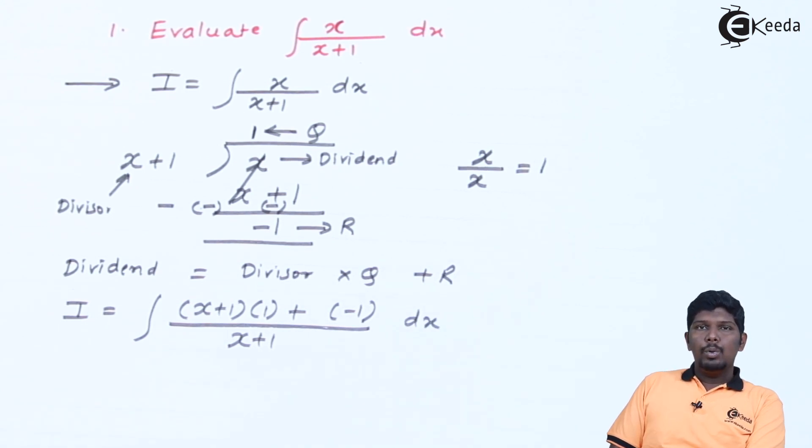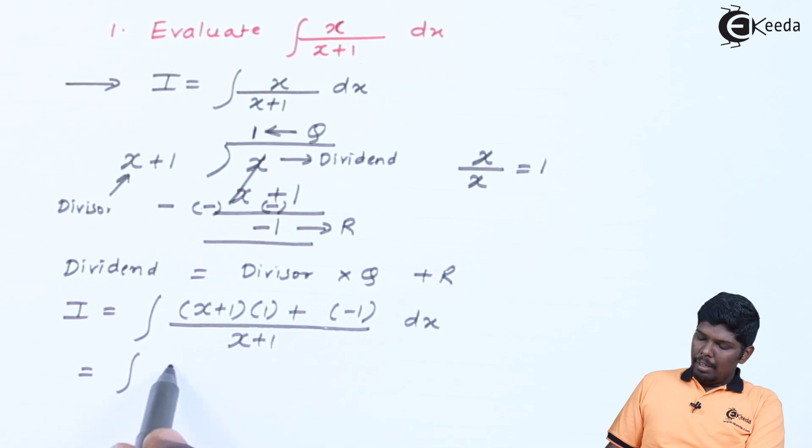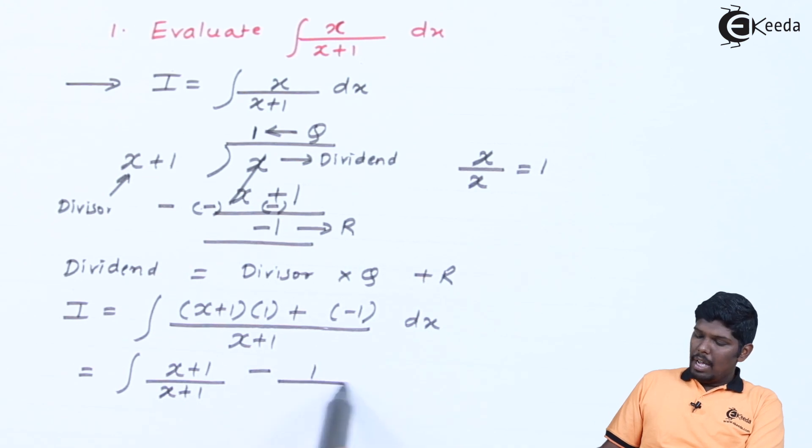After doing this step remember to separate denominator to all the terms present in the numerator. In the numerator we have two different terms. Therefore, after separating we have x plus 1 upon x plus 1 plus into minus is minus. We have 1 upon x plus 1 dx.